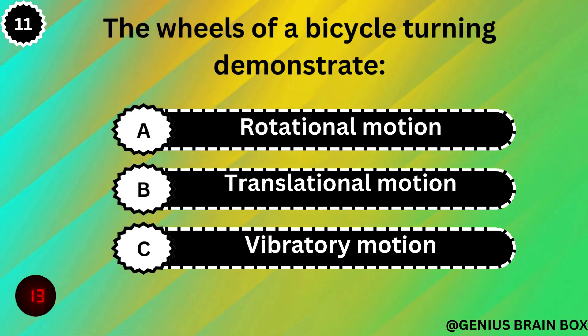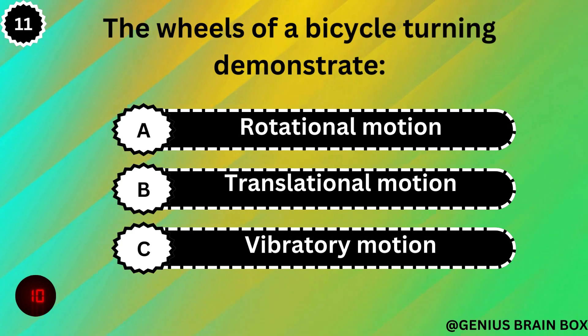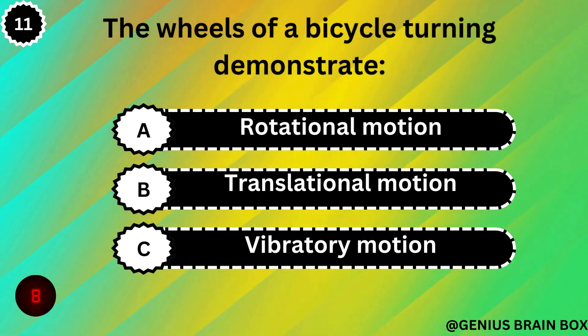The wheels of a bicycle turning demonstrate: rotational motion, translational motion, or vibratory motion.